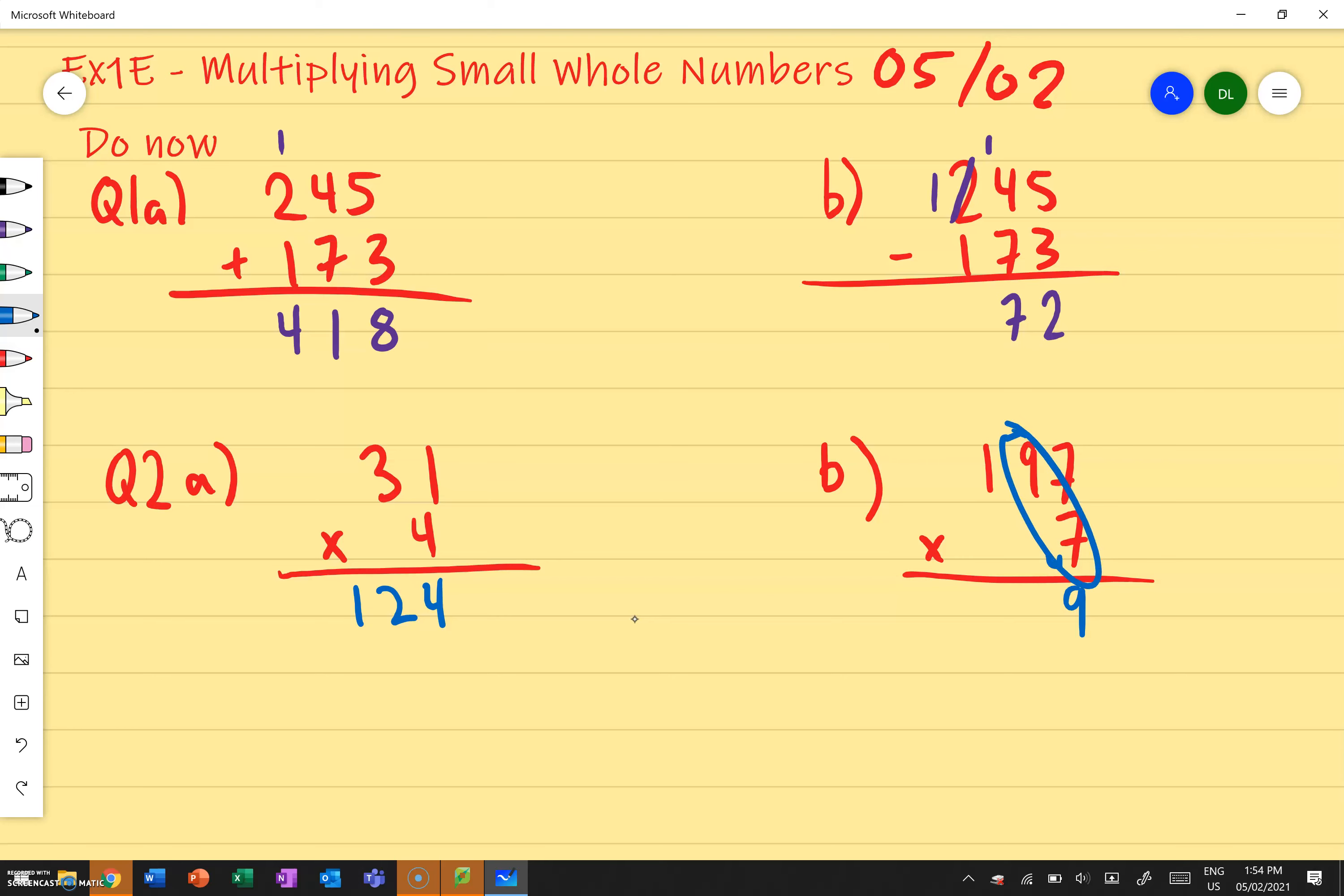We've multiplied those two and plus 4. Perfect. What's 7 times 9? 63. Now what's 63 plus 4? So I'm gonna write 7 and then write the 6 over here. Now we done?